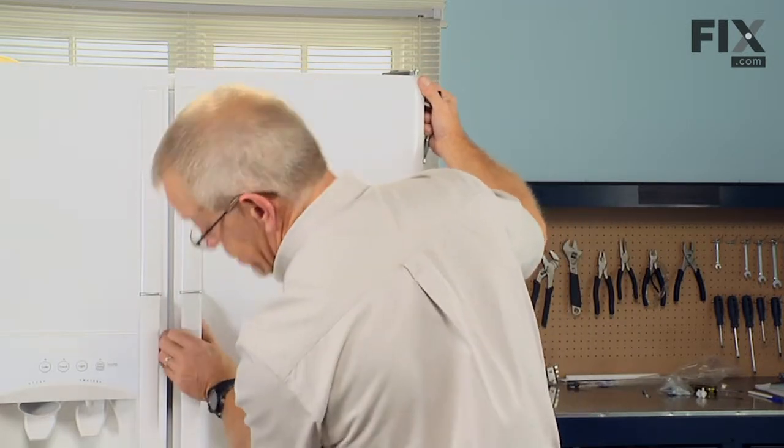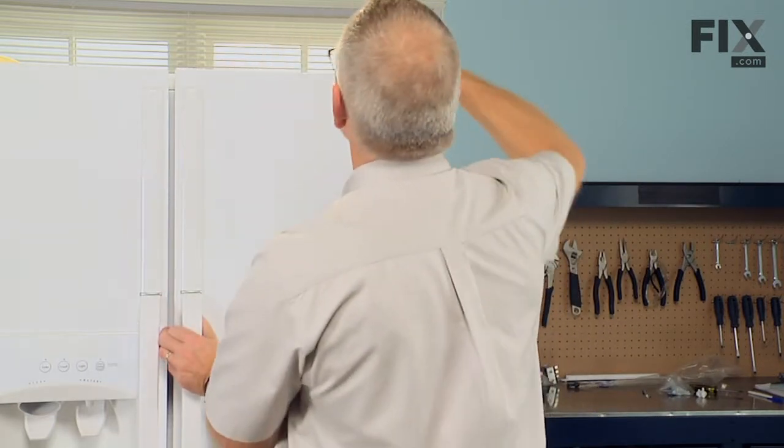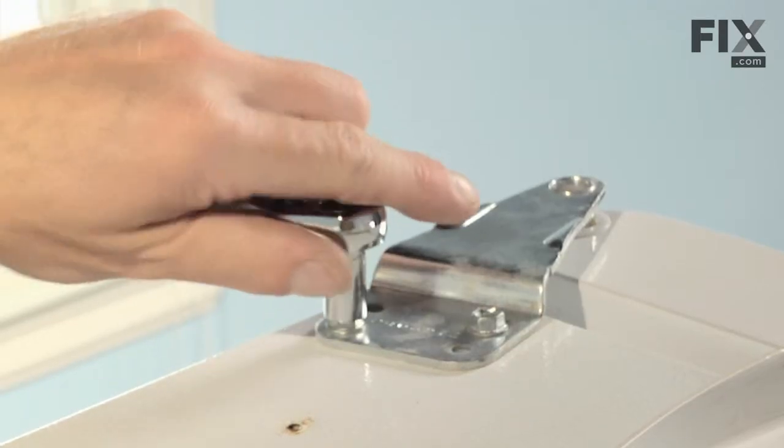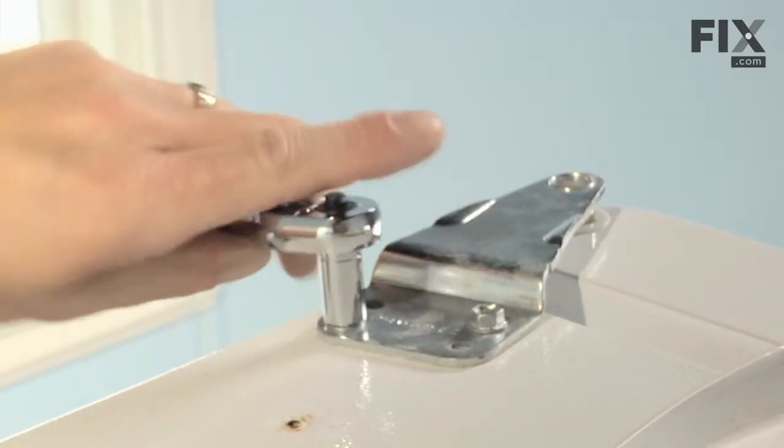Make sure the gap between the two doors is even from top to bottom and that the top of the door is even with the cabinet. Tighten them into place.